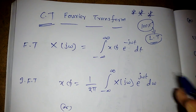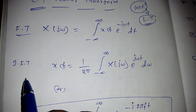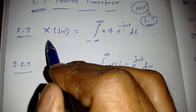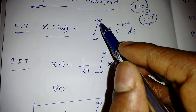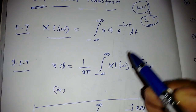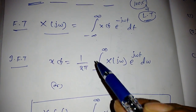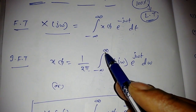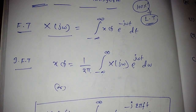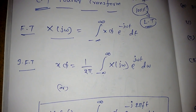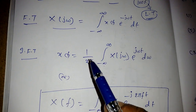This is a very important topic. There are two formulas: the Fourier transform and the inverse Fourier transform. The Fourier transform formula is: X(jω) = integral from minus infinity to infinity of x(t) · e^(−jωt) dt. The inverse Fourier transform is: x(t) = (1/2π) · integral from minus infinity to infinity of X(jω) · e^(jωt) dω.